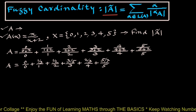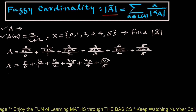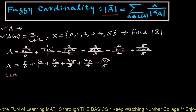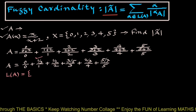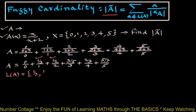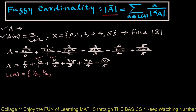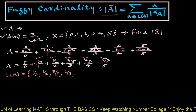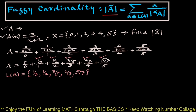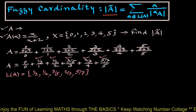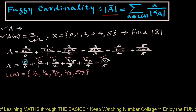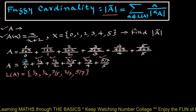We write the level set of A, which includes: 1/3, 1/2, and so on up to 5/7. Please note that we have excluded 0 from the level set of A.